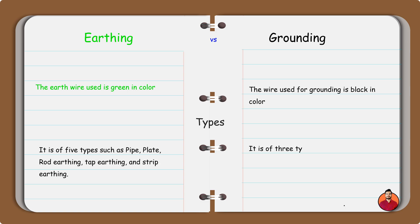The grounding is of four types, such as solid, resistance, resonant, and reactance grounding.